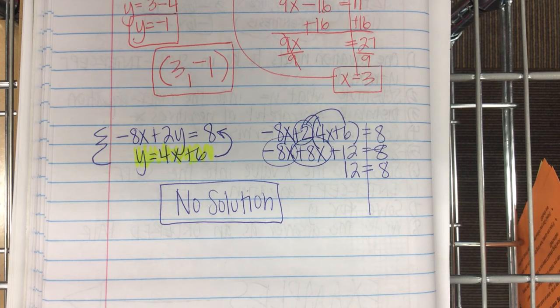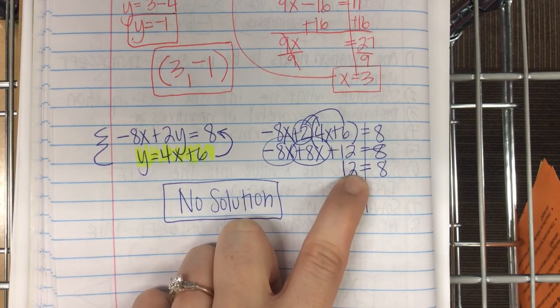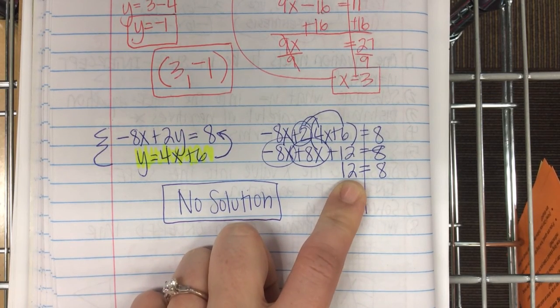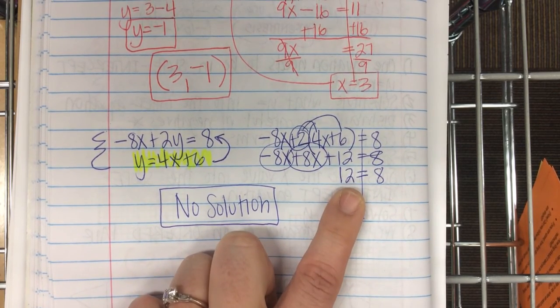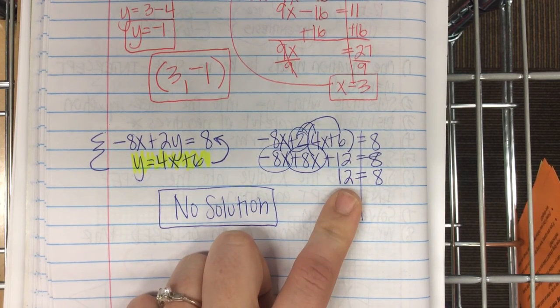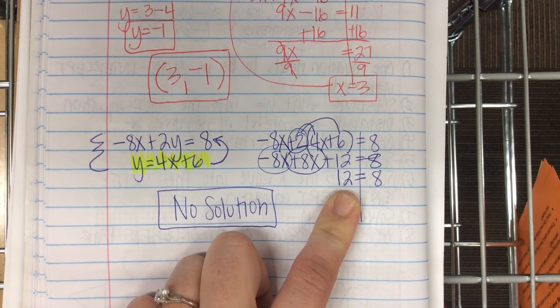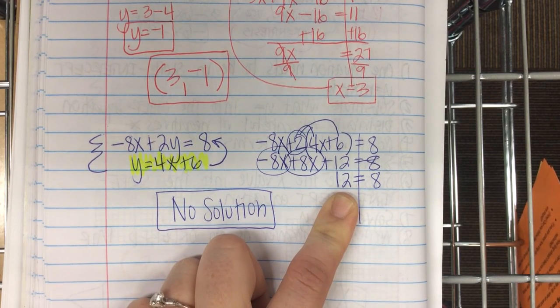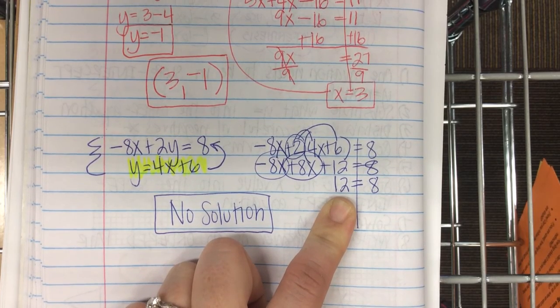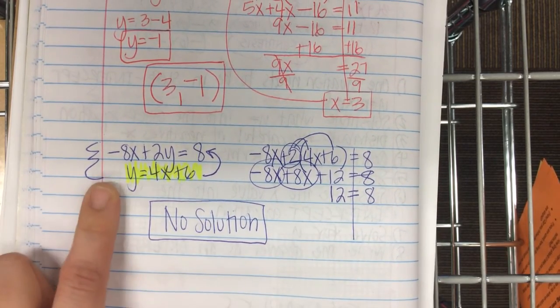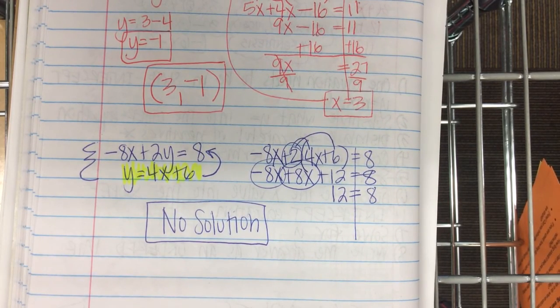Could you have an infinite solution question? Yeah. What would it look like instead of 12 equals 8 is no solution, what would it look like if it was an infinite solution? 8 equals 8. 8 equals 8 or 12 equals 12. What kind of lines are those? There are two lines on top. They're exactly the same, right? They're on top of each other. They have the exact same slope, same intercept. These parallel lines have what? Same slope, different intercept. Good.